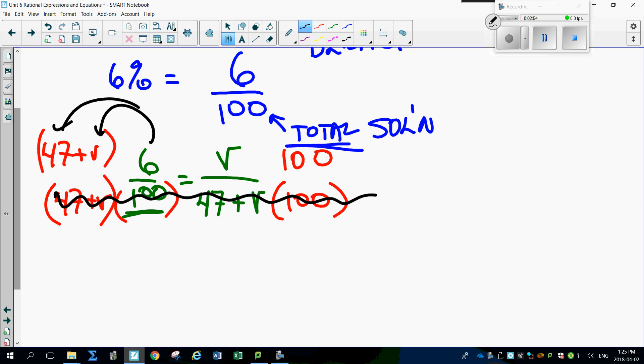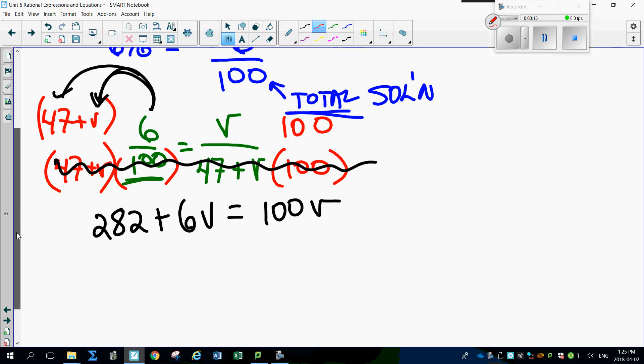When you distribute this you're going to get, check this out, 6 times 47 which is 282 plus 6 times V which is 6V equals to, oh look at this, 100 times V which looks like 100V. Combine like terms.